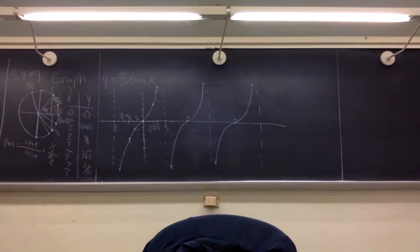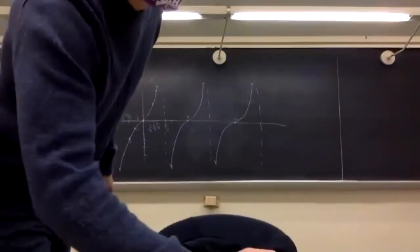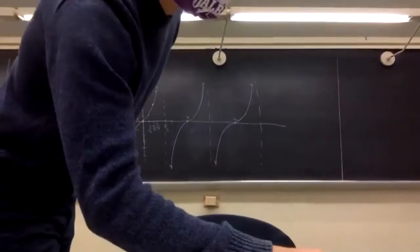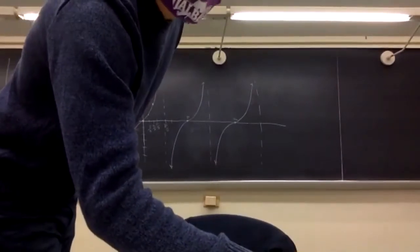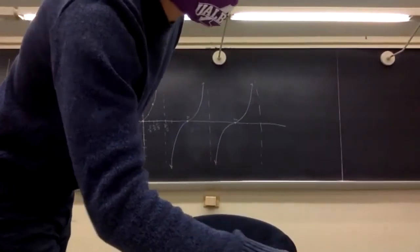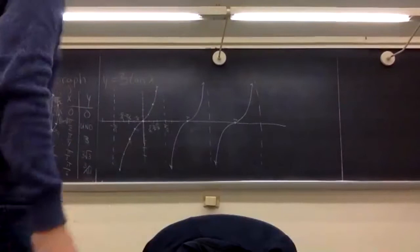Cotangent is next. Number 13 — negative cotangent.